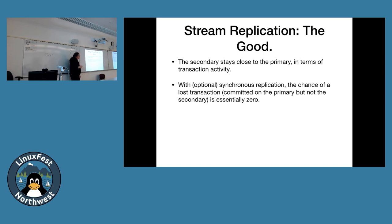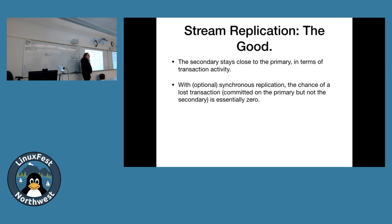Synchronous replication doesn't do great things for throughput, but you can turn it on and off on a per-transaction basis. For example, enable it for 'someone withdrew money from the ATM' but not for 'I just sent them their balance email.' This lets you balance durability and performance based on transaction importance.